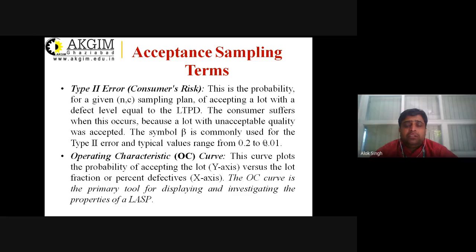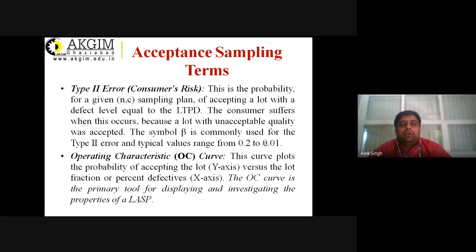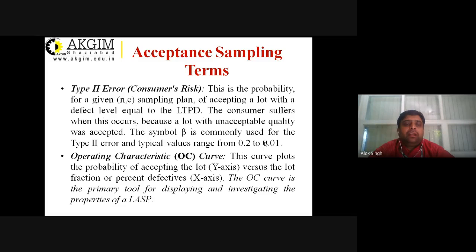Type 2 error is the consumer's risk. This is the probability for a given N and c sampling plan — where N denotes the number of samples taken and c denotes the count of defects — of accepting a lot with a defect level equal to the LTPD. The consumer suffers when this occurs because a lot with unacceptable quality level was accepted. The symbol beta is commonly used for the Type 2 error, and typical values range from 0.01 to 0.2.